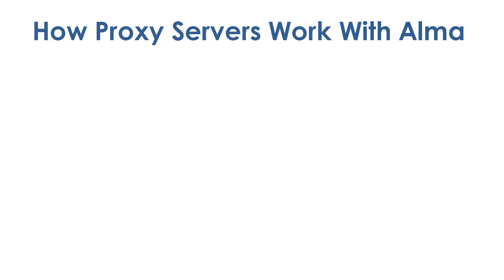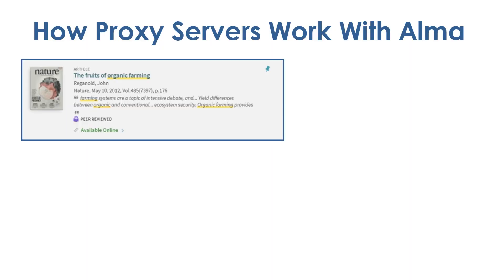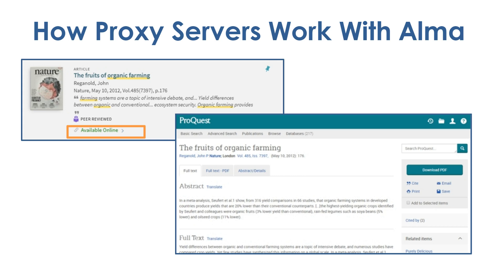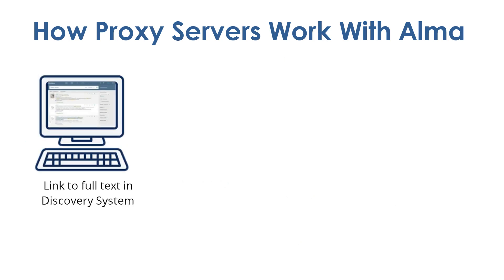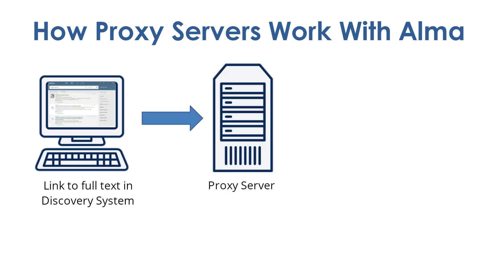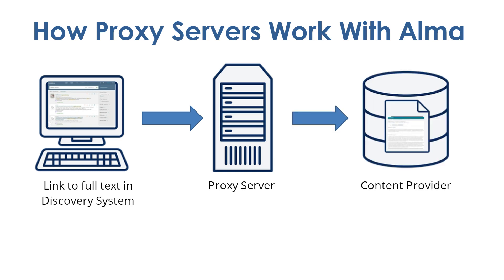Here's how proxy servers work with Alma. When a patron clicks on a link to a subscription resource in your discovery system, the Alma Link Resolver automatically includes the proxy information to access the full text in the content provider's database. Alma uses the OpenURL format to link to the resource from the discovery system, but first it sends the request to your proxy server. The proxy server authenticates the request, then forwards the request to the content provider.